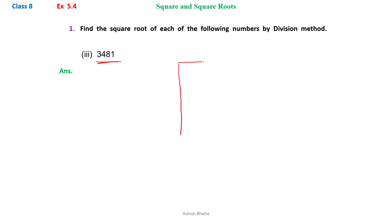So first of all we will write down 3,481. Then we will make up the pairs from back.